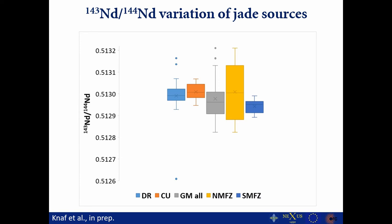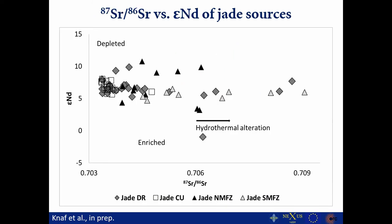When we look at the neodymium isotopic composition variability, it is even worse — samples are even more overlapping. Neodymium is clearly not something we can use for source discrimination. This plot combines the strontium and neodymium isotope compositions, and again everything is heavily overlapping. The Cuban samples cluster quite closely, but still overlap significantly, especially with the Dominican Republic. We also see late-stage alteration mainly affecting jadeites from the southern Motagua fault zone and the Dominican Republic.